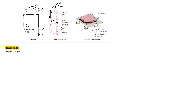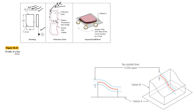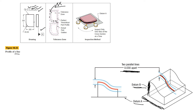In another example, a complex-shaped part has a profile on the top surface. That profile must lie between two parallel lines with respect to two datums — datum A and datum B. The profile of this line must be within 0.033 inches with respect to datum A and datum B.